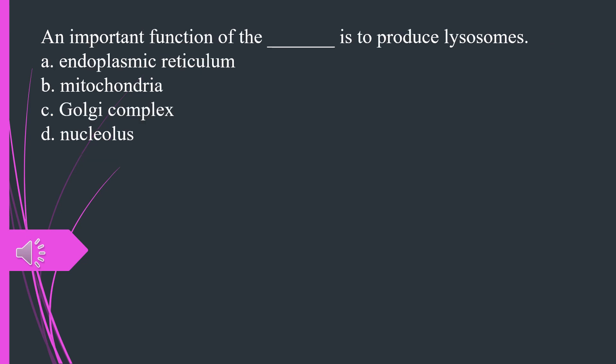An important function of the what is to produce lysosomes. A. Endoplasmic reticulum B. Mitochondria C. Golgi complex D. Nucleolus. The answer is C, Golgi complex.